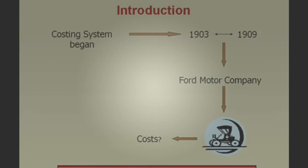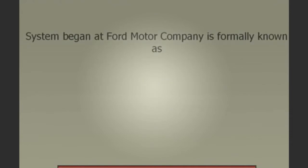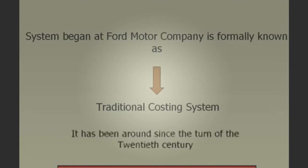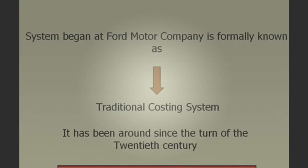Between 1903 to 1909, the accountants of Ford Motor Company came up with a costing system. The costing system that emerged around this period, believe it or not, is pretty much the same identical system used by most companies today. This system is formally known as the traditional costing system — it's called traditional because it's been around since the turn of the 20th century.